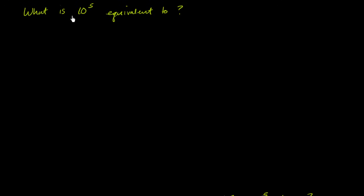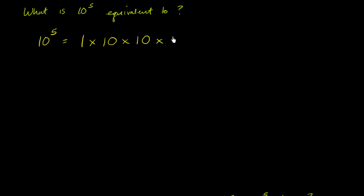We are asked: what is 10 to the fifth power equivalent to? Well, 10 to the fifth power is the same thing as taking a 1 and multiplying it by 10 five times. So that's 1 times 10 times 10 times 10 times 10 times 10 — five 10s total.